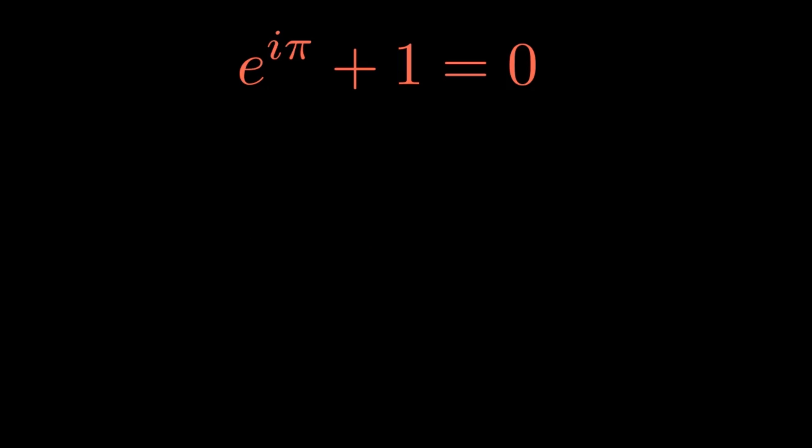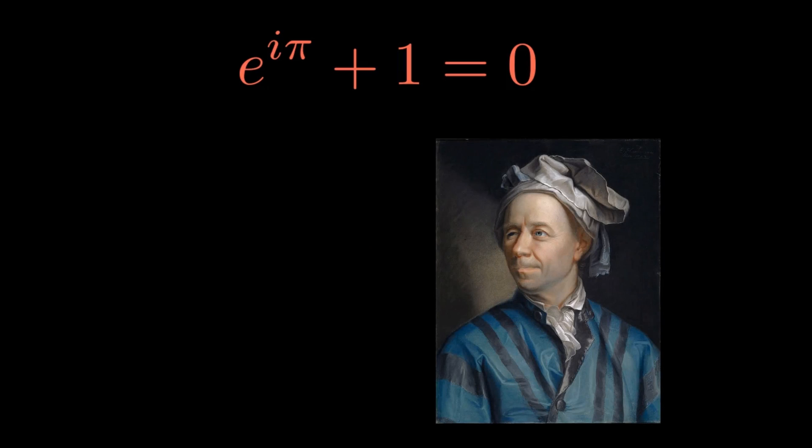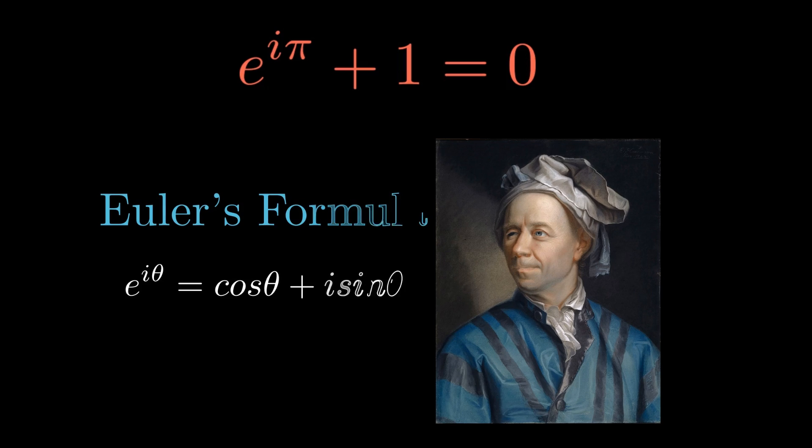Euler's identity is named after the Swiss mathematician Leonhard Euler, one of the greatest minds in the history of mathematics. This is a special case of Euler's formula: e to the i theta equals cos theta plus i sine theta, evaluated at theta equals pi.